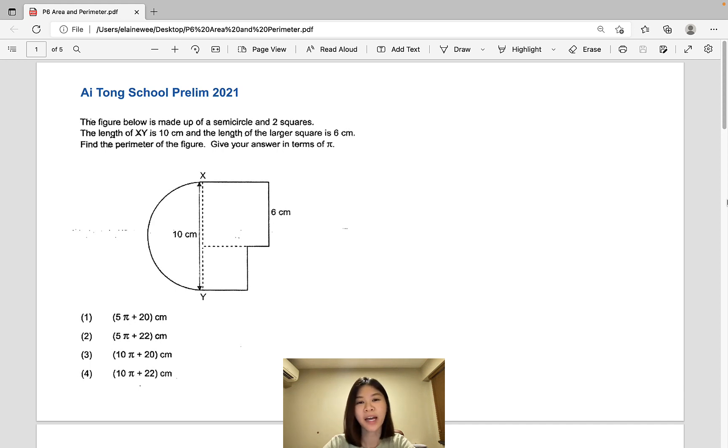In the past tutorials, I have been covering PSLE Paper 2 questions. This time, we will be looking at some multiple choice questions involving area and perimeter.